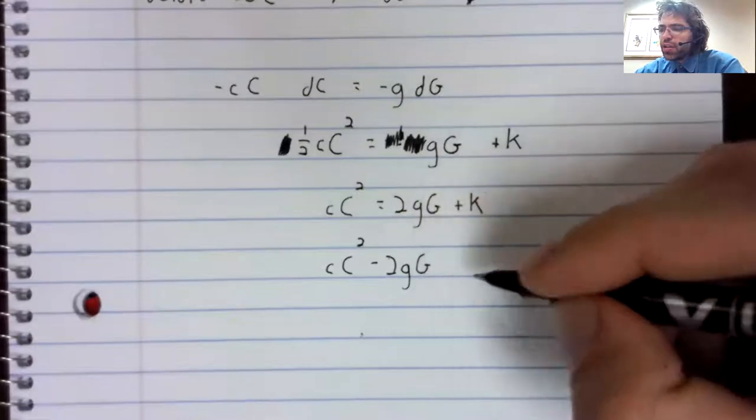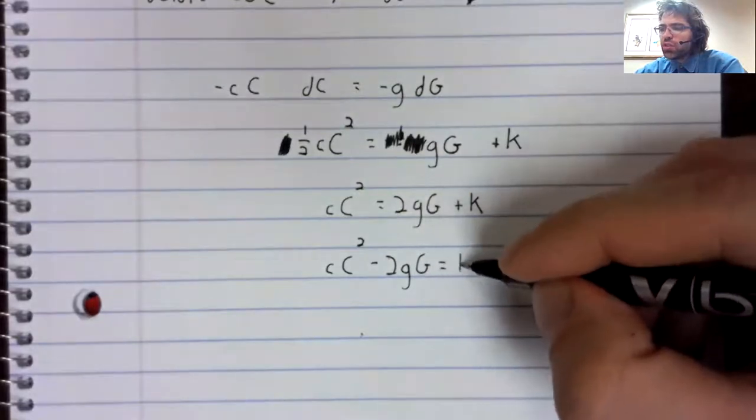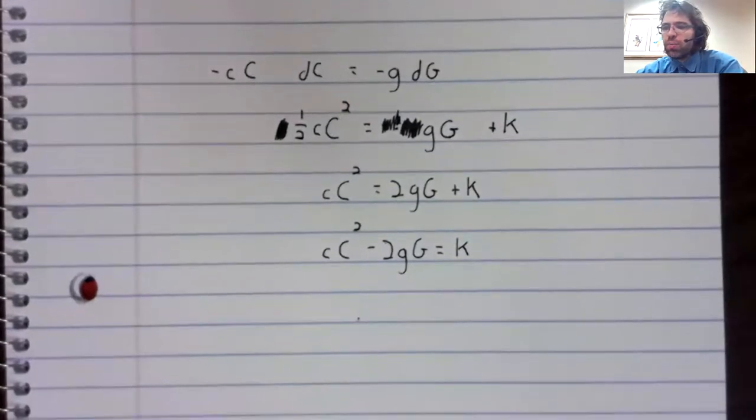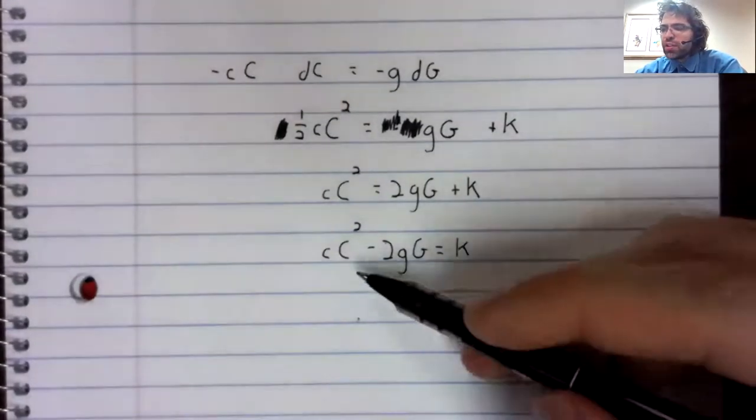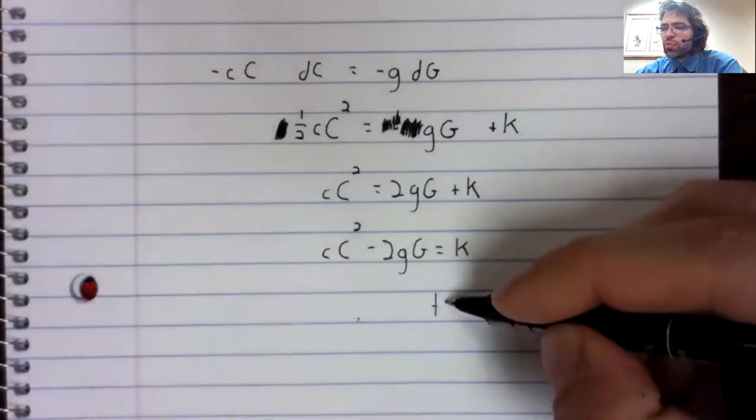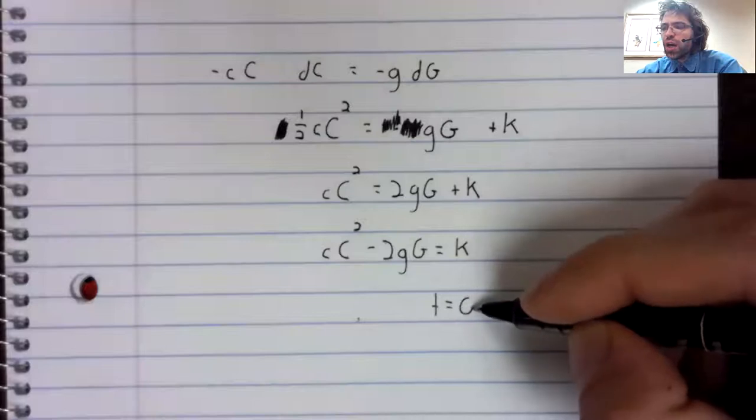We'll bring everything but the constant of integration to one side of the equality. And then capital C, capital G, these are both functions of time.